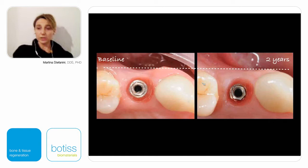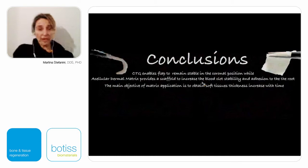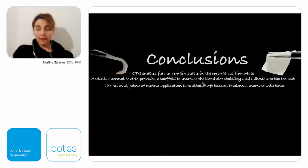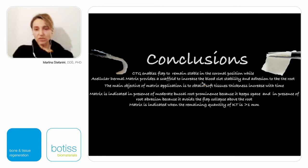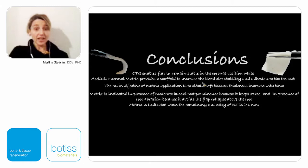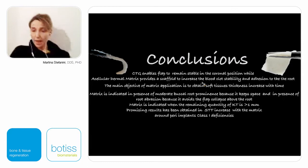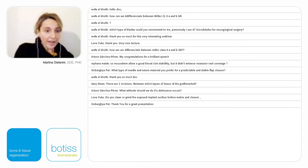So let me summarize: use the collagen matrix as much as possible instead of connective tissue graft in order to reduce morbidity for your patient. When treating gingival recession, you can apply the mucoderm when you have at least one millimeter of keratinized tissue in your flap and in presence of moderate buccal root prominence and root abrasion, because the matrix will avoid flap collapse above the root. Promising results have been obtained in soft tissue increase with the matrix for soft tissue deficiencies.